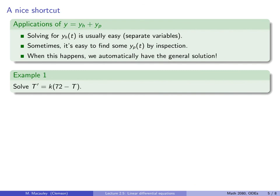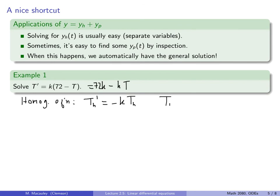Example: think of T as the temperature of a cup of coffee in a 72-degree room. Before, we solved this using separation of variables. Let's solve it even quicker. The homogeneous equation is T' = −KT, which I'll call TH' = −K·TH — we know right away this is exponential decay: TH = c·e^(−Kt).